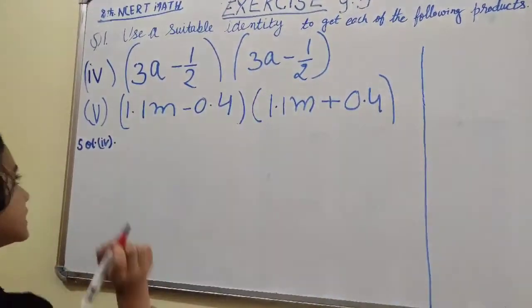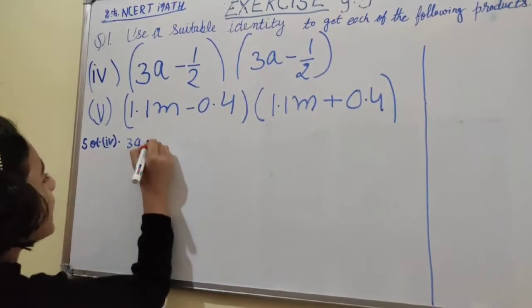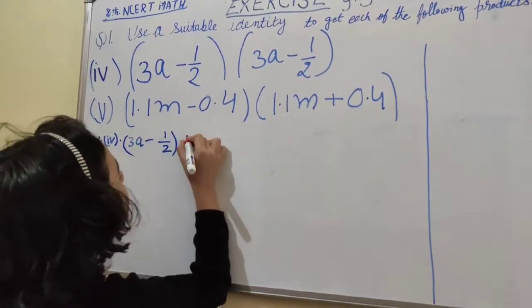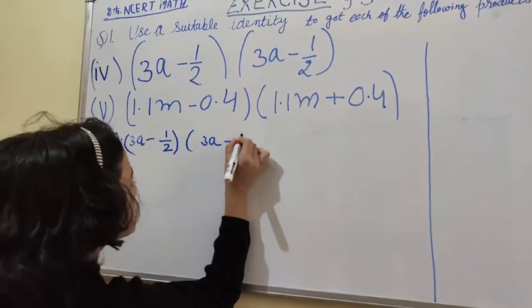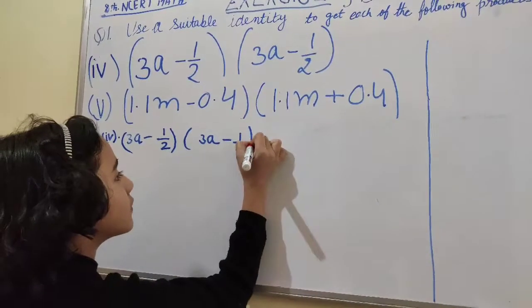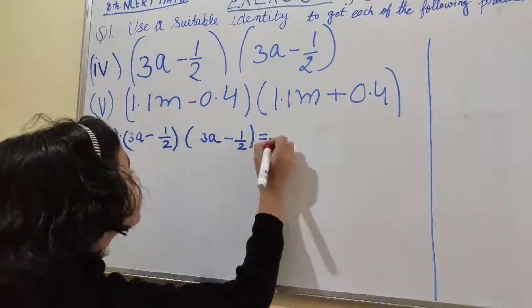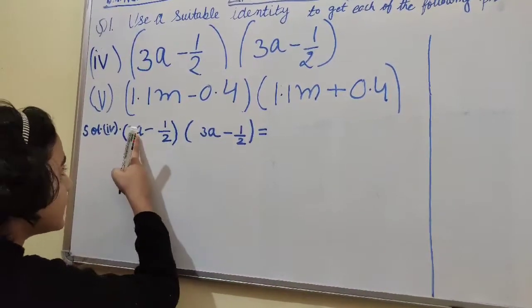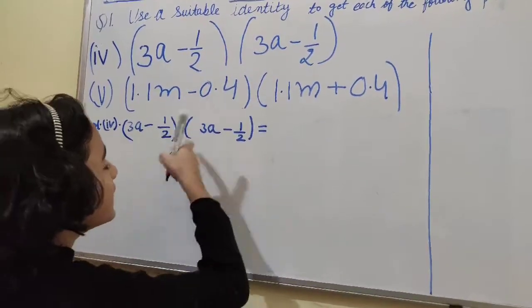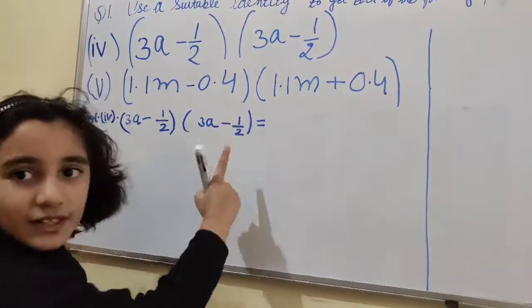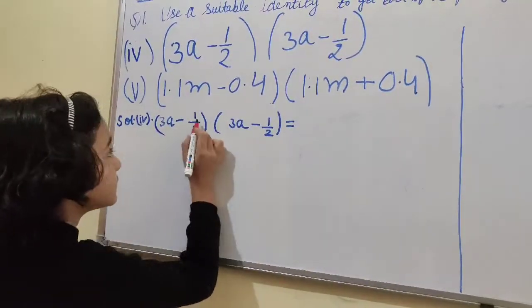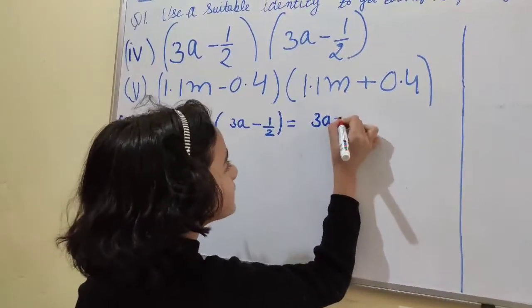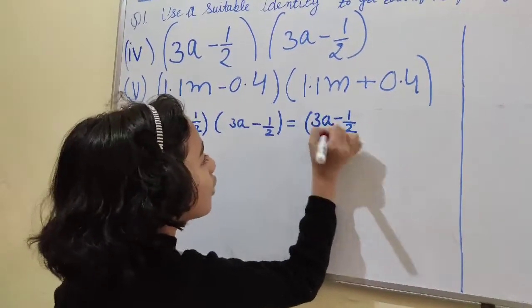First we have to write the same question: (3a - 1/2) into (3a - 1/2) which is equal to (3a - 1/2) squared, since 3a - 1/2 is repeating. So we write (3a - 1/2) whole square.